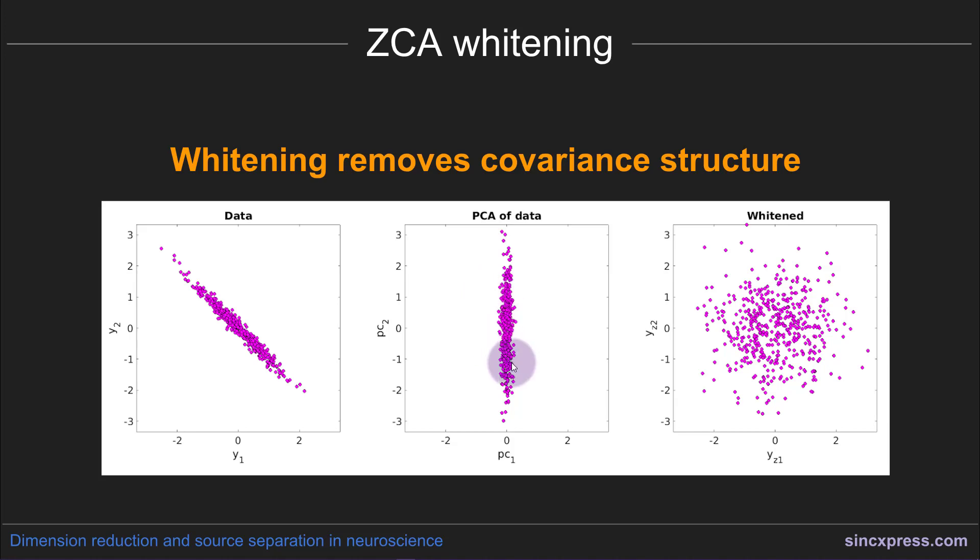So the idea of applying whitening, and ZCA in particular, is to fan out the data so that the covariance structure is removed. So this has the covariance matrix that is going to be some constant times the identity matrix. This dimension gets compressed and this dimension gets expanded. And that is what whitening does.